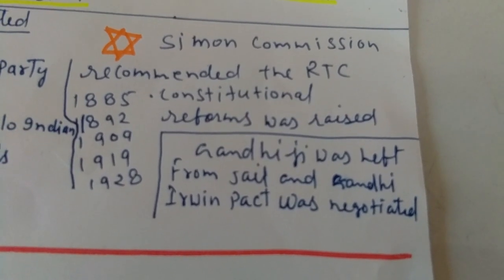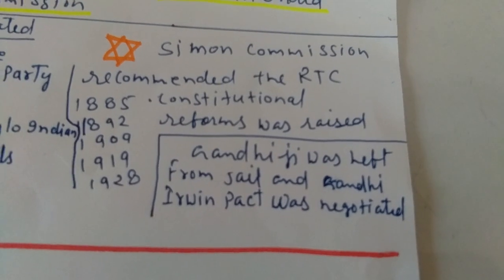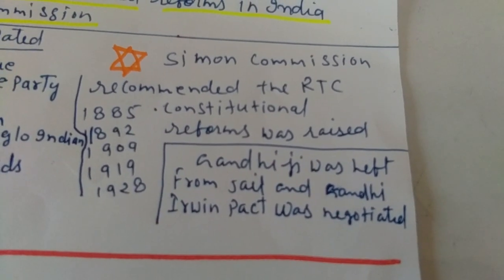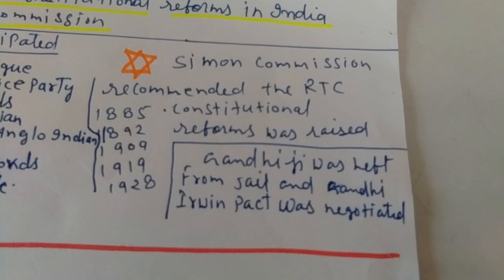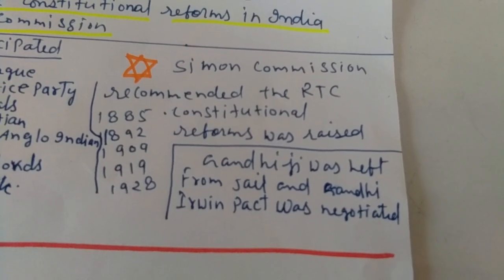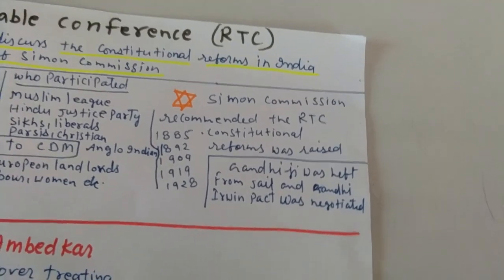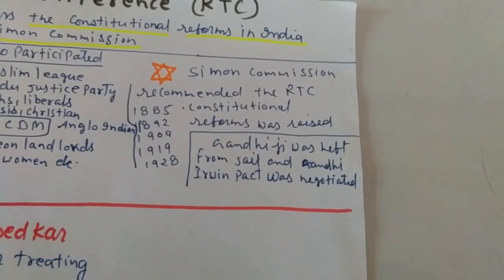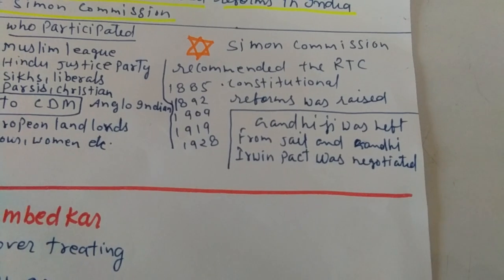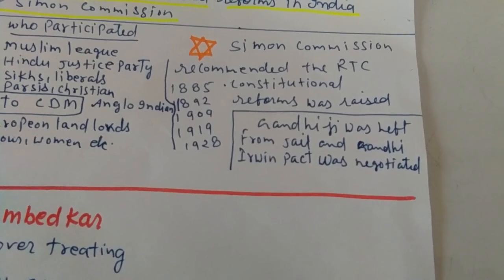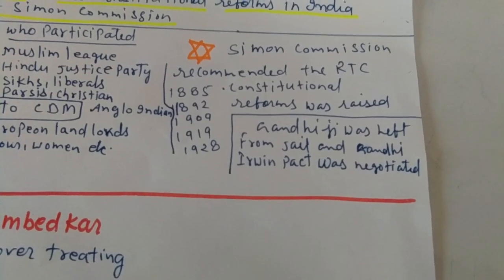After 1885, the time when the Congress party was formed, the same demand or recommendation was made for constitutional reform in India. This reform process started from 1885, then 1892, 1909, 1919, and lastly 1928.